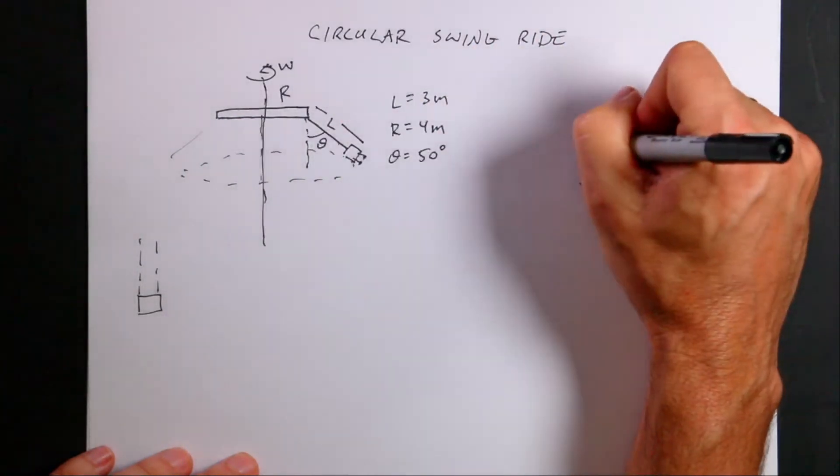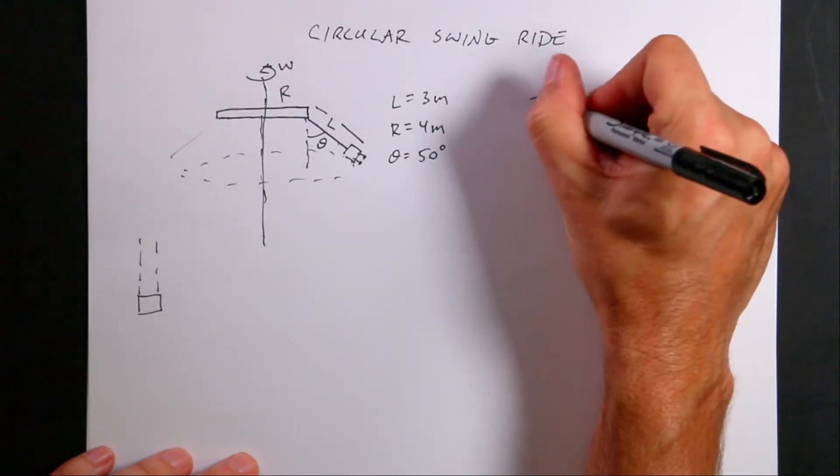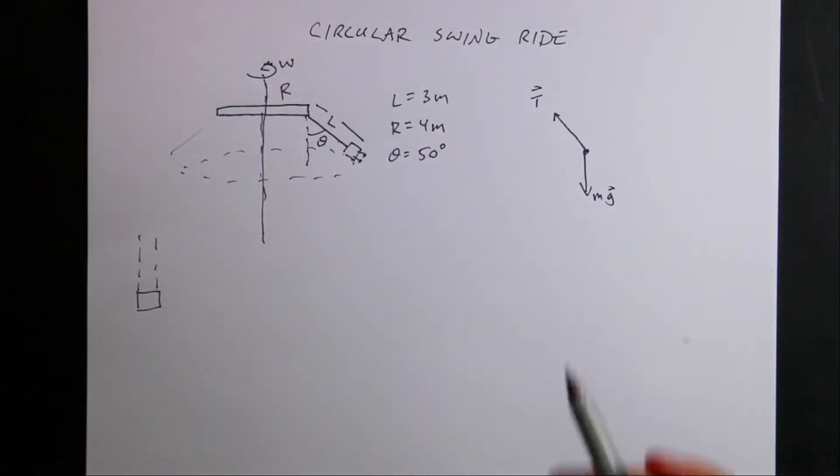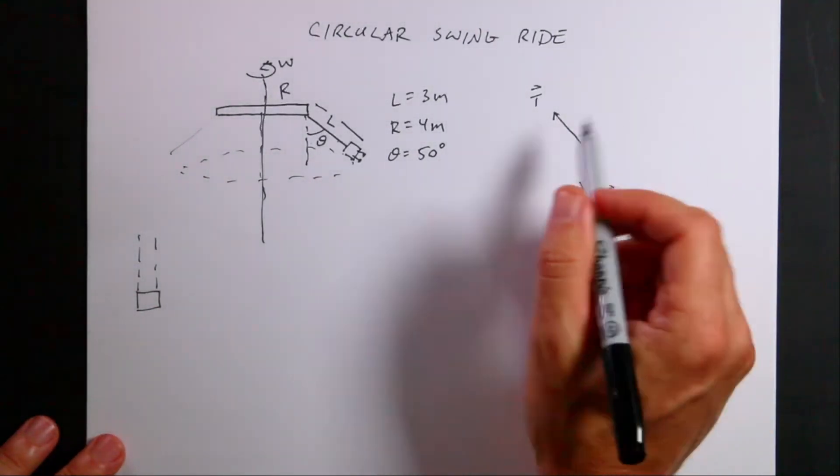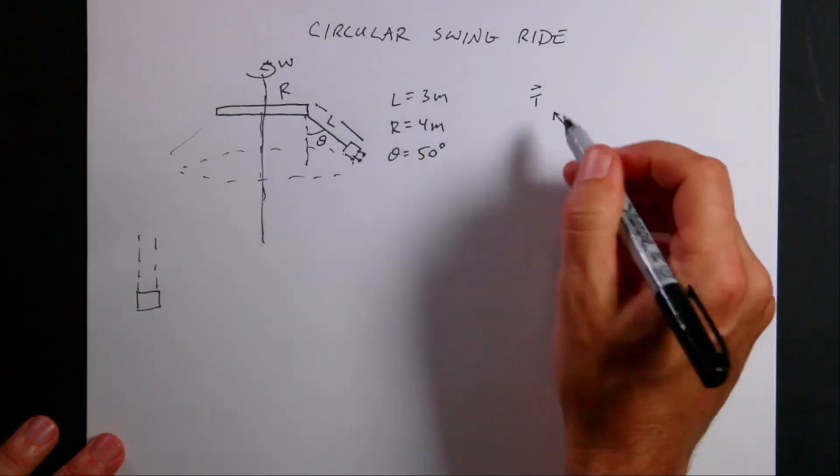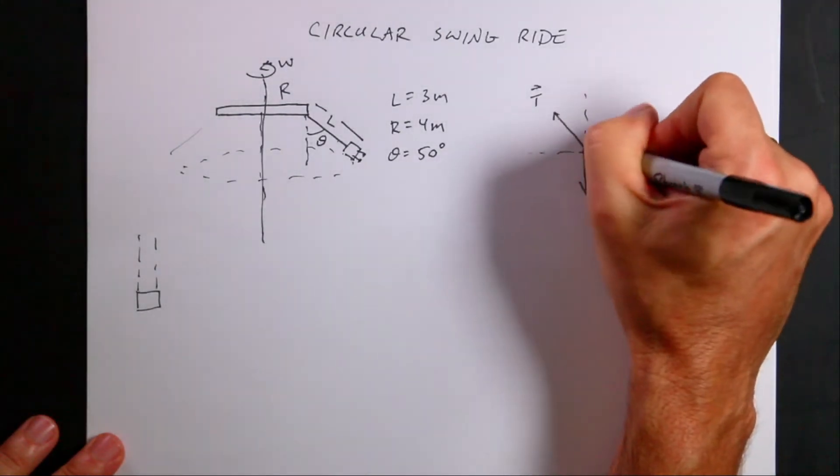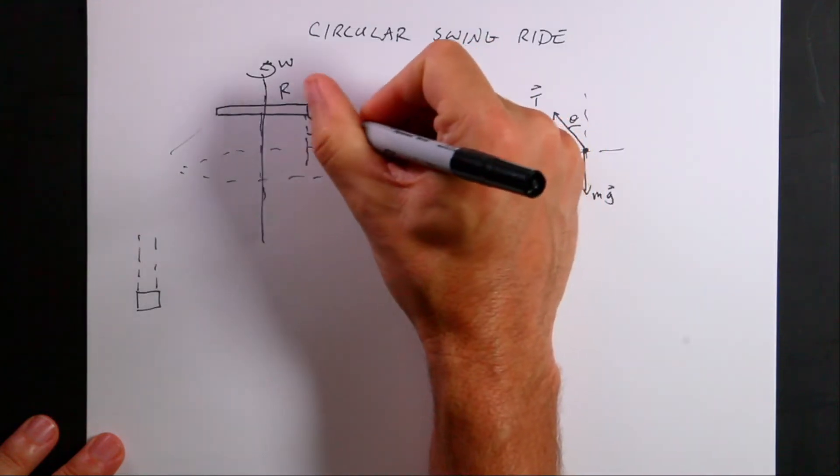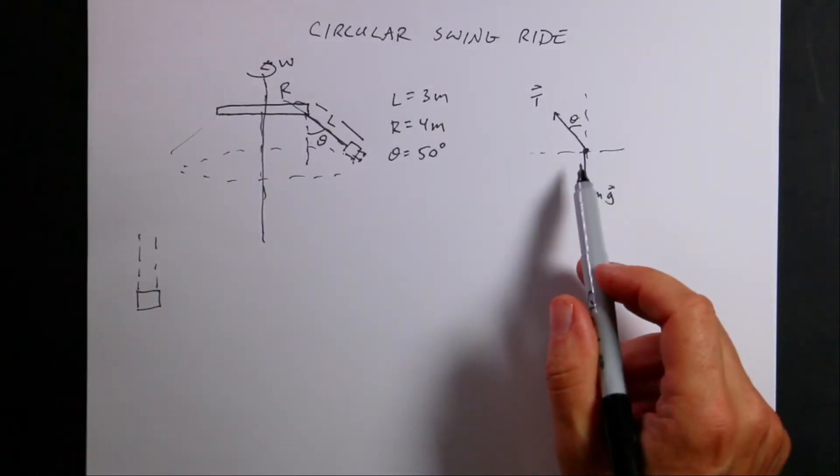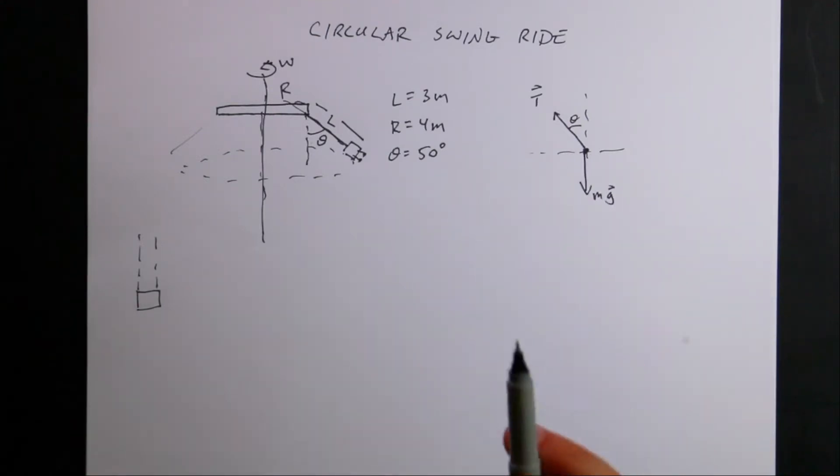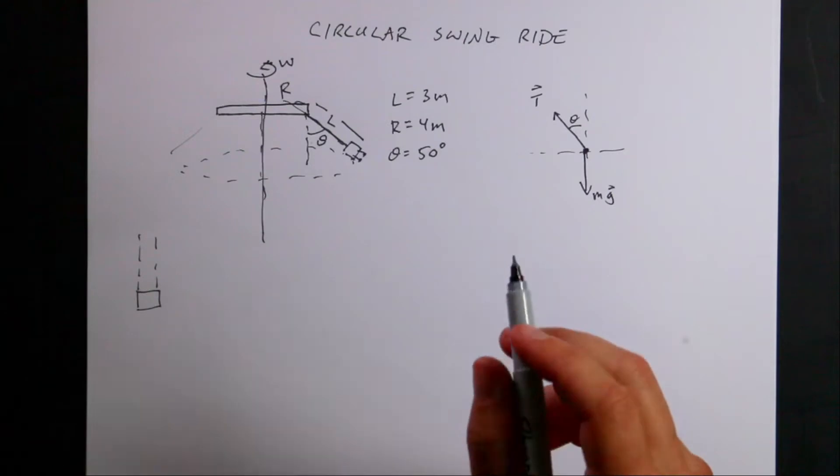And there's a tension in the rope. Thinking about long-range and contact forces - the rope is touching the cable, gravity's not. There's nothing else touching that person. You can see the tension in the rope, this angle is θ right there. With these two forces in different directions, there's no way they can add up to zero. They create a net force.